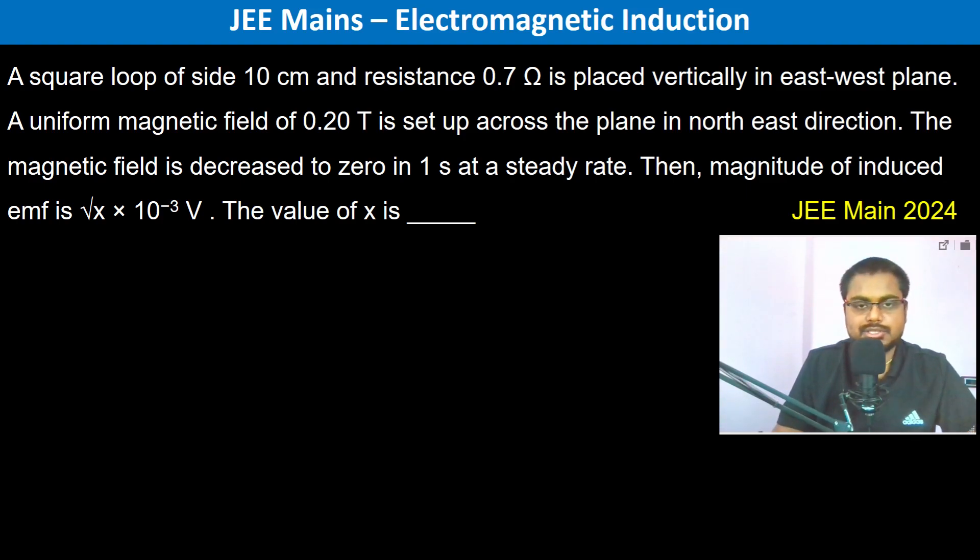The square loop of side 10 centimeter and resistance 0.7 ohm is placed vertically in the east-west plane. So we have west and east. The plane is placed vertically, so it is something like this, and it is of area 10 centimeters by 10 centimeters.